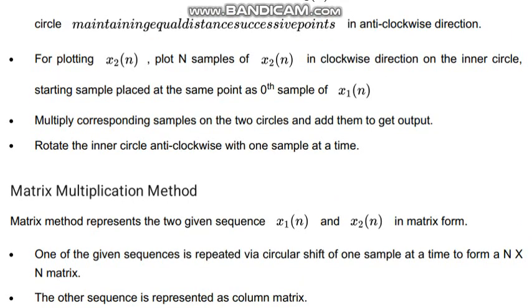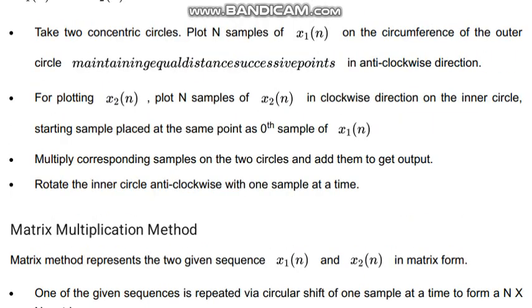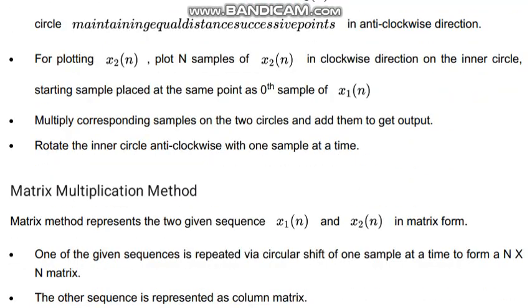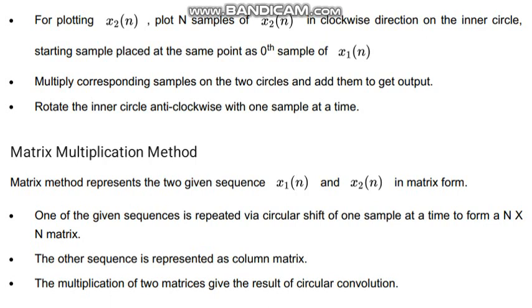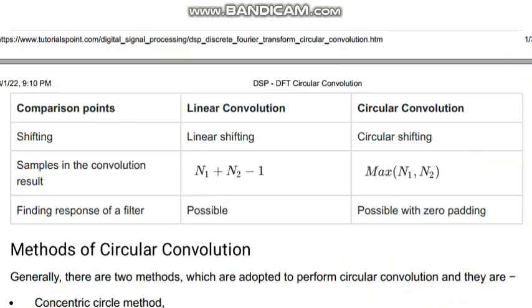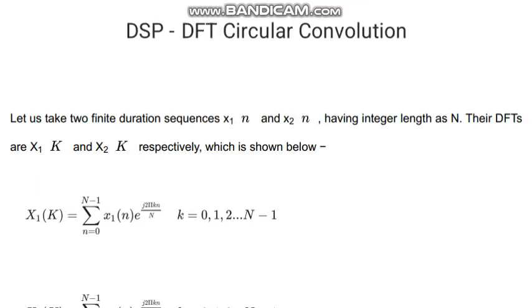That is for plotting x2, plot n samples of x2. These are the steps of the concentric circle method. And if you go through the matrix multiplication method, matrix multiplication method represents the two given sequences x1(n) and x2(n) in matrix form. Then we do the multiplication with the matrix form. So that's all for now in the circular convolution method. Thank you very much for being with me.